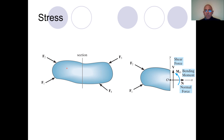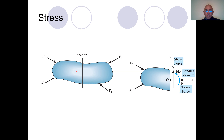We always consider static equilibrium. Static equilibrium means the sum of forces equals zero — the object is either motionless or moving at constant velocity with no acceleration. This will be the same in strength of materials: the sum of external forces and the sum of moments must each equal zero.